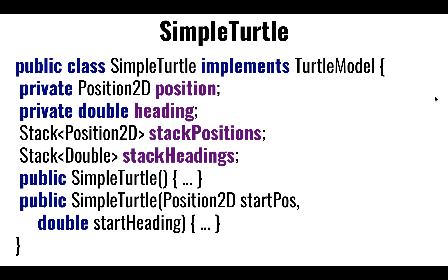The turtle implementation — a simple turtle implementation — was representing the data types as follows: we're just going to use double to track how many degrees we are heading. The position told us what exact position we're in right now. And then we had two stacks so that we can backtrack to any position point in space and time where we were before. We have a constructor that initialized all these things and another constructor that made some initial initialization.